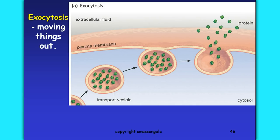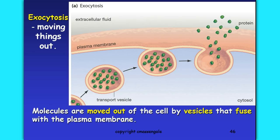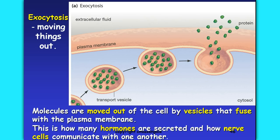We also have to worry about moving some of the really big stuff. Exocytosis is moving things out — the prefix 'exo' means exiting, or moving out of the cell. As molecules are moved out, they are typically in what's called a transport vesicle or vacuole, and that vesicle fuses with the cell membrane and the materials are exposed. This is how many hormones are secreted and how nerve cells communicate with one another.